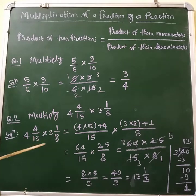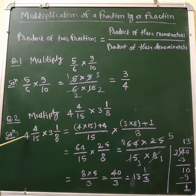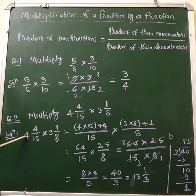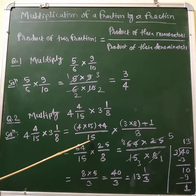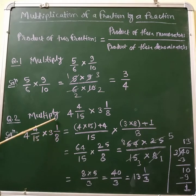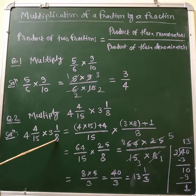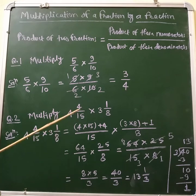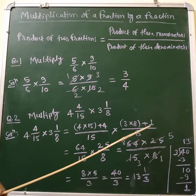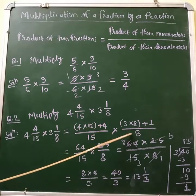How do we convert mixed fractions into improper fractions? For 4 and 4/15, we multiply the whole number by the denominator: 4 multiplied by 15, then add the numerator. So it is (4×15 + 4) divided by 15. Similarly for 3 and 1/8: 3 multiplied by 8 plus 1, divided by 8.